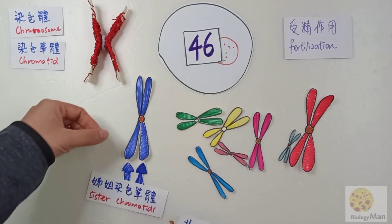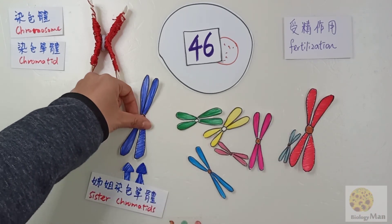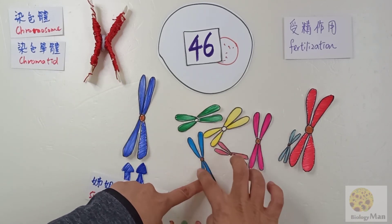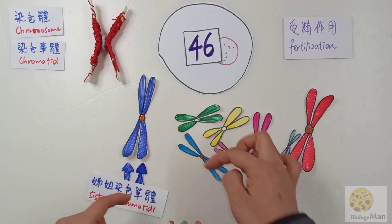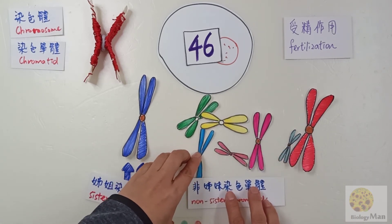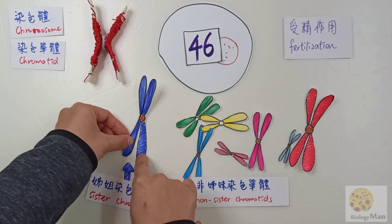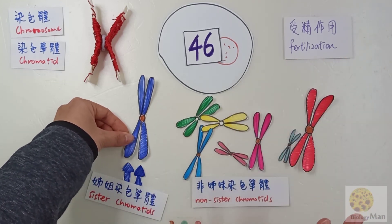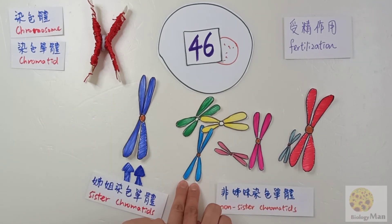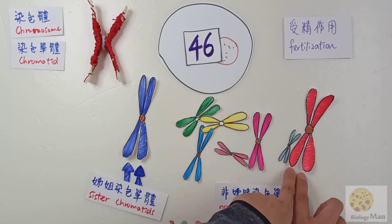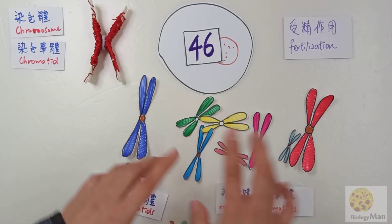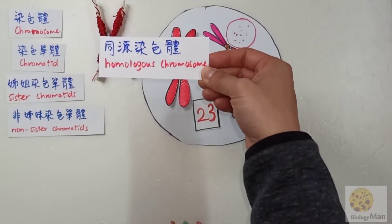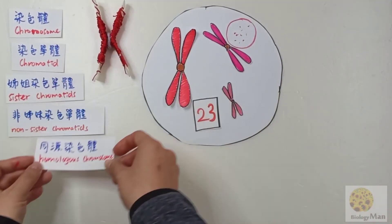Then what are non-sister chromatids? If the chromatids are not sister chromatids, they are the non-sister chromatids. For example, this one chromatid is a non-sister chromatid with another chromatid over here, because they are not in the same chromosome. To repeat: these two are sister chromatids, and these two are sister chromatids — chromatids in the same chromosome are sister chromatids.